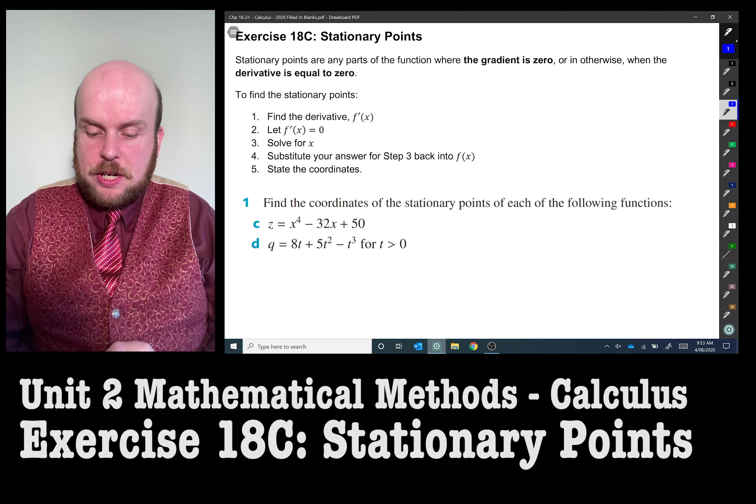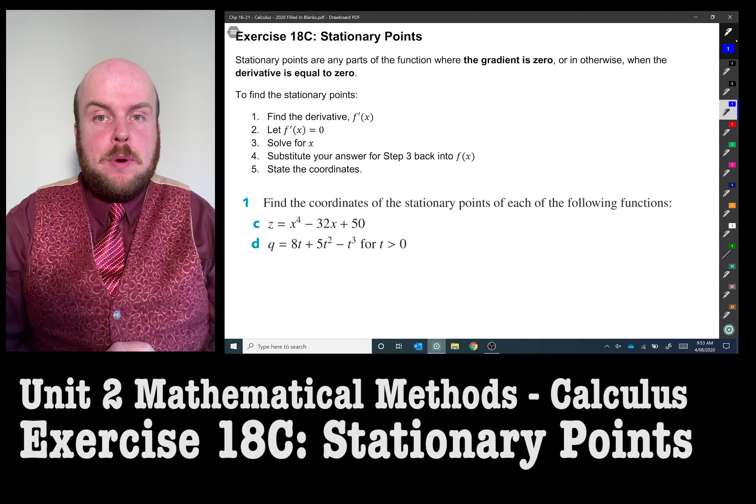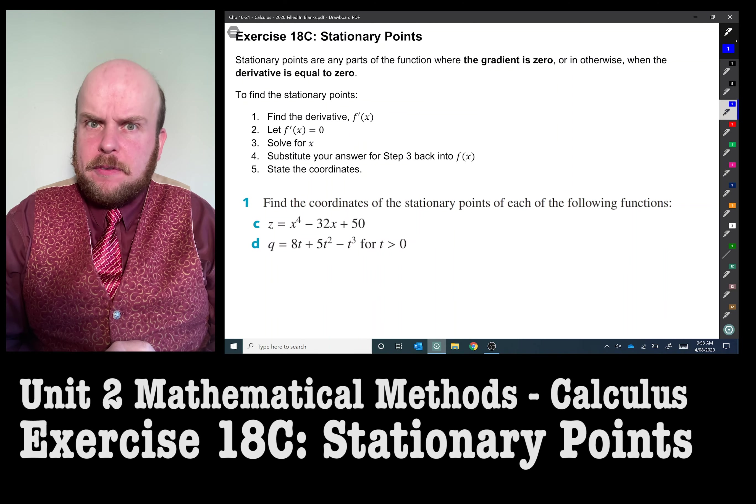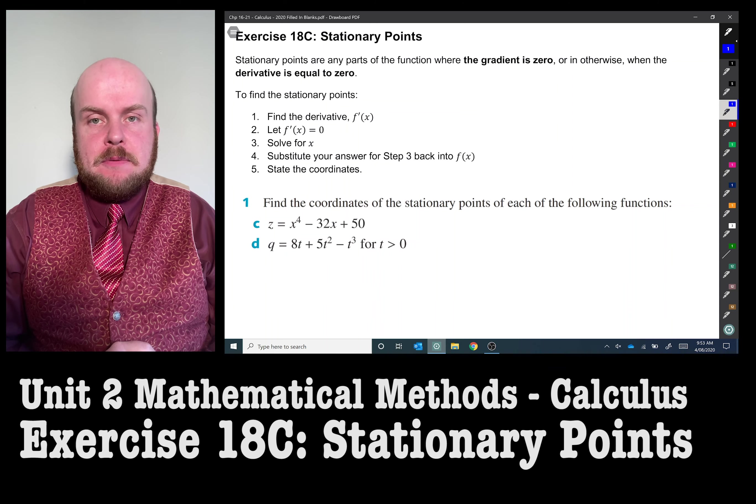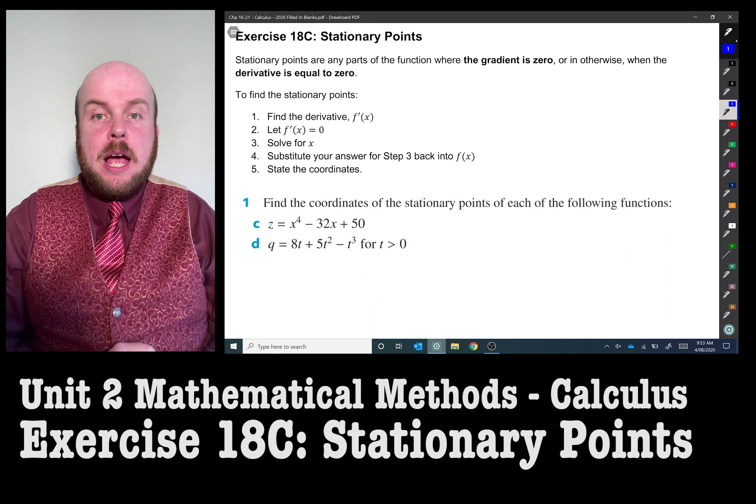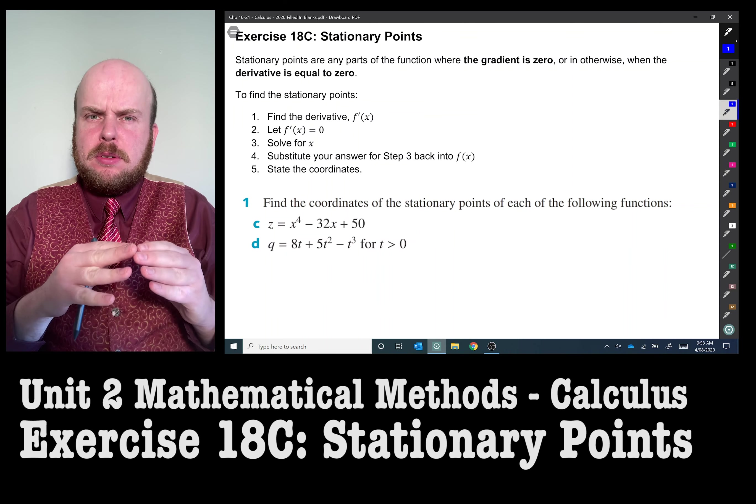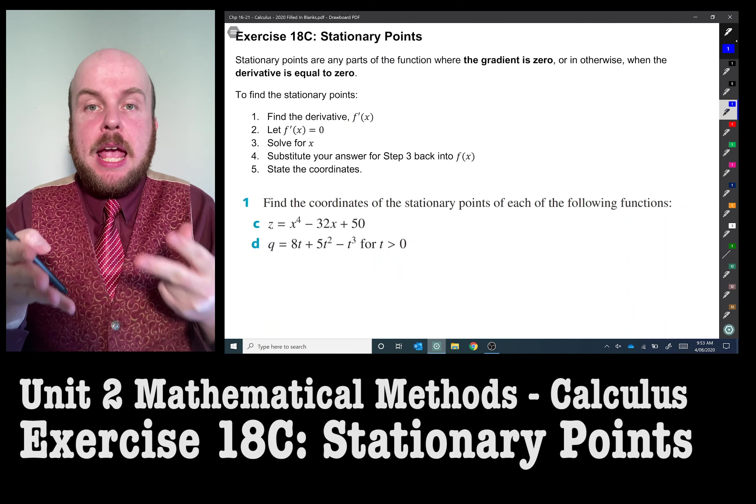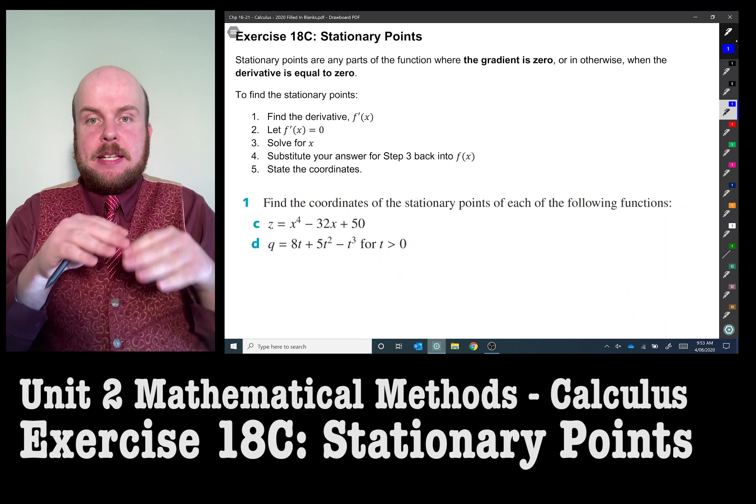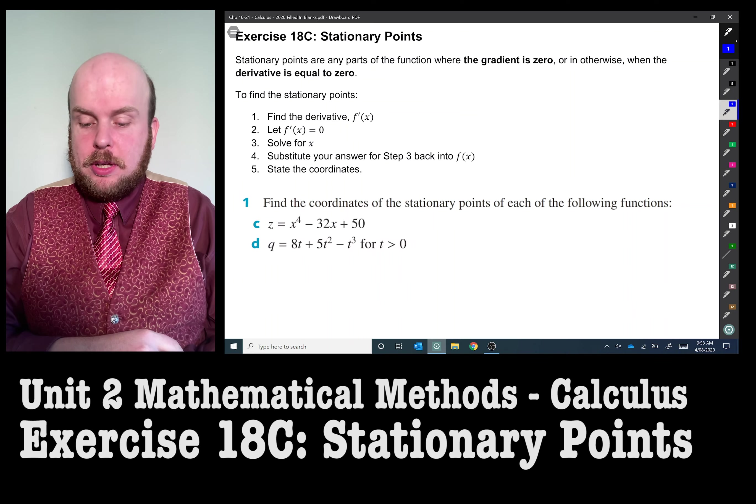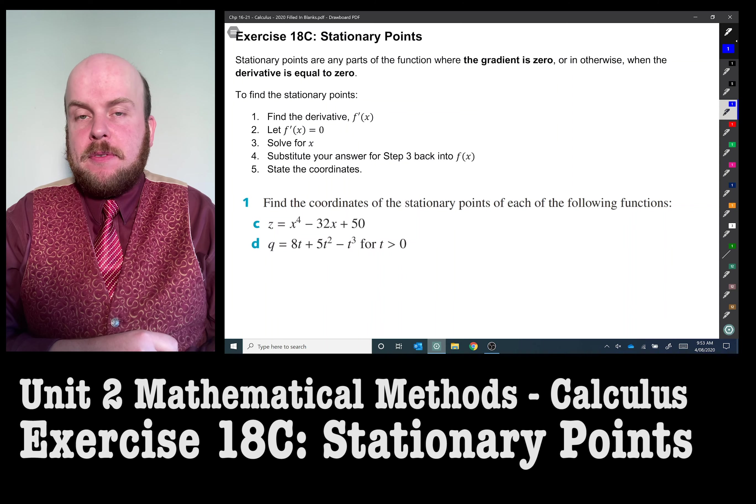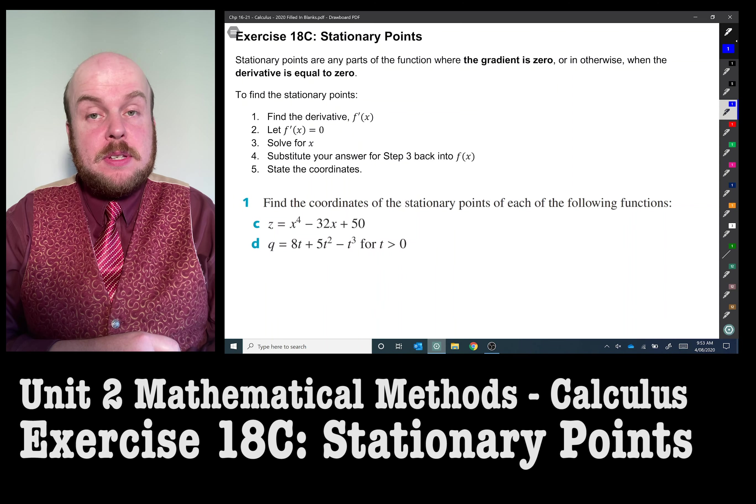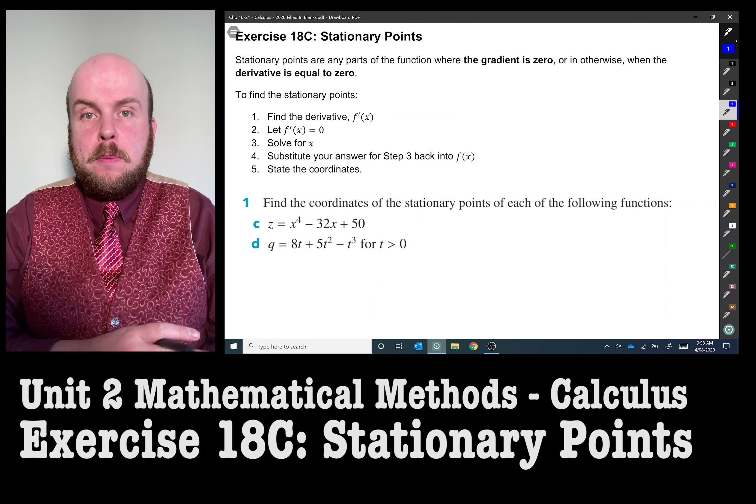Exercise 18C, stationary points. Stationary points are any parts of the graph where the gradient is equal to zero, the flat parts if you like. In the past we have simply said turning points, however stationary points is the umbrella term for turning points, points of inflection, and generally any points where the gradient is flat and equal to zero. Therefore if we find the derivative and make that equal to zero, we can use this to find turning points or points of inflection.